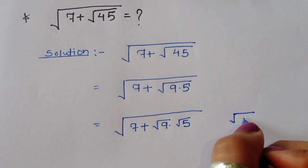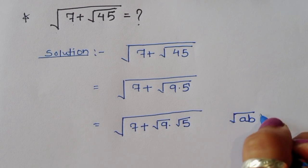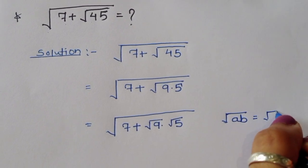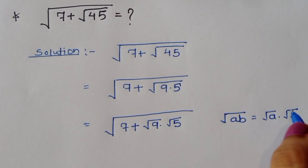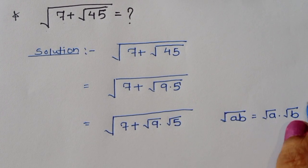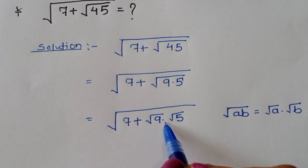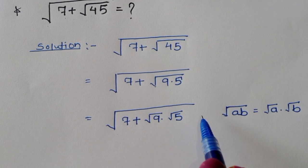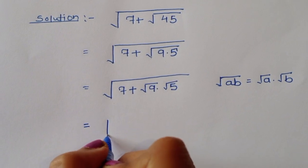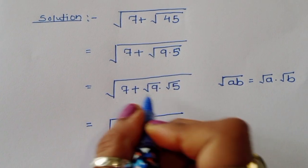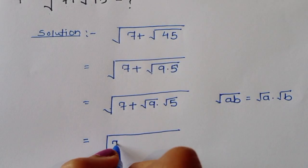Here we are using the formula: square root of a times b equals square root of a times square root of b. Using this formula, we can write square root of 9 times 5 as square root of 9 times square root of 5. So we have square root of 7 plus square root of 9 times square root of 5.